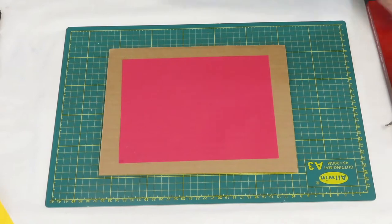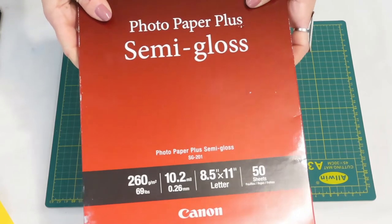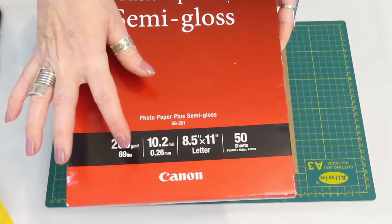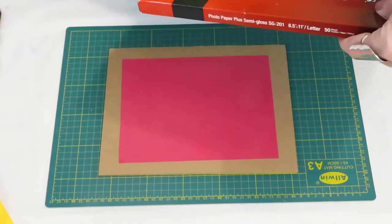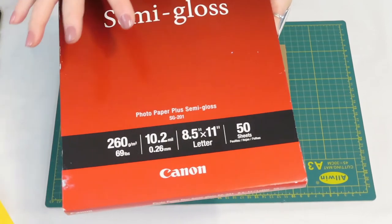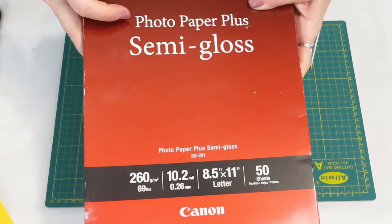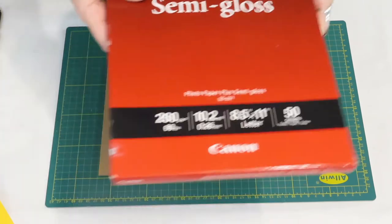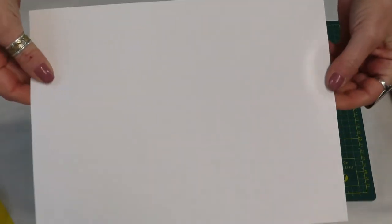First off, the only photo paper I know that works is the Canon Semi-Gloss Photo Paper. So it's 69 pound, 10.2 milliliters. It's 8.5 by 11. You get 50 sheets. I think it's like $20, I haven't, it's been a while since I bought this. Got this on Amazon. It's a semi-gloss and it's a SG-201. So you want to, you don't want, there's a backside and the front side. You want to use the front side.